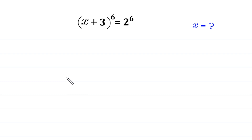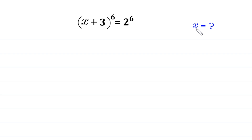Hello, welcome to how to solve this very nice algebra equation. (x + 3) whole to the power 6 is equal to 2 to the power 6. We need to find all possible values of x.